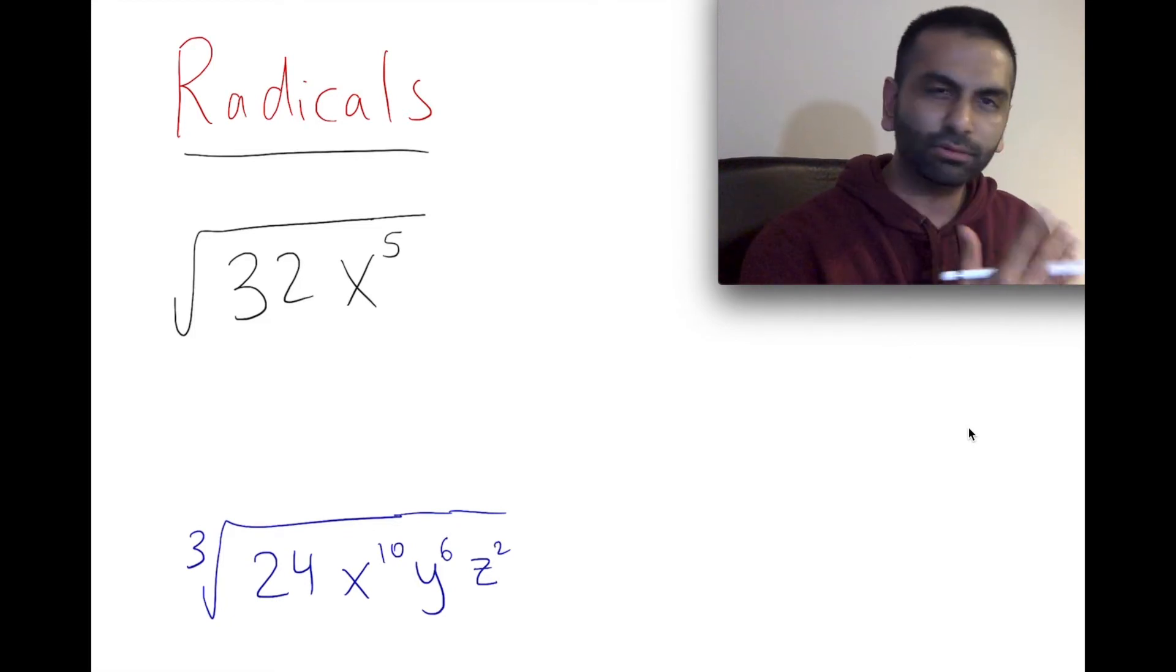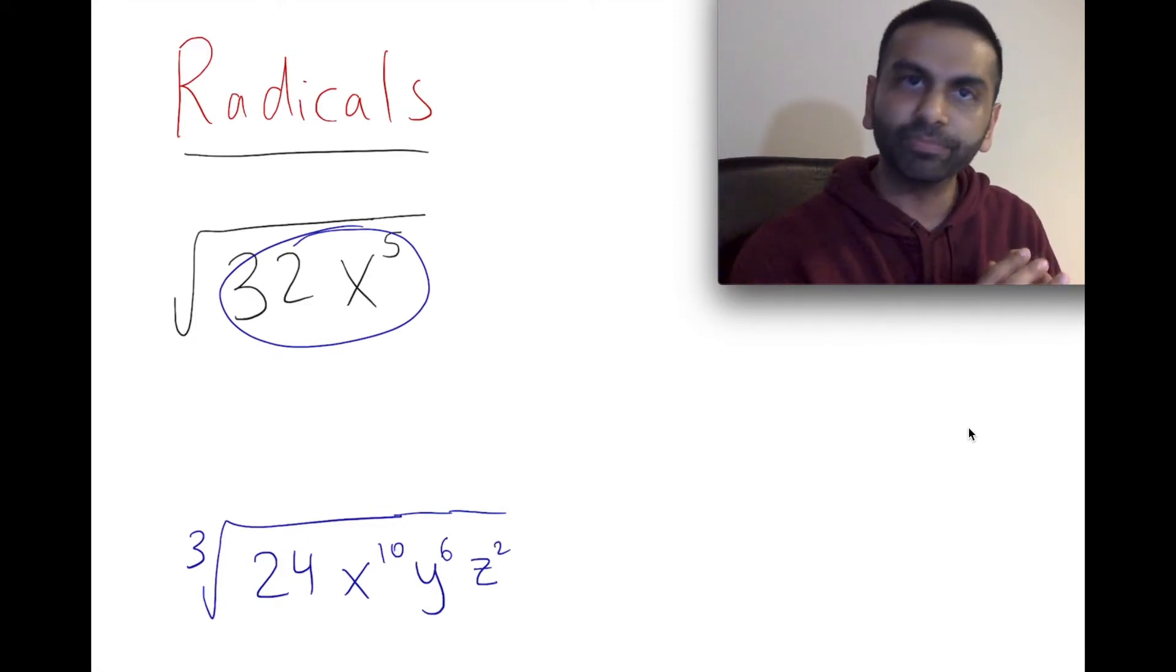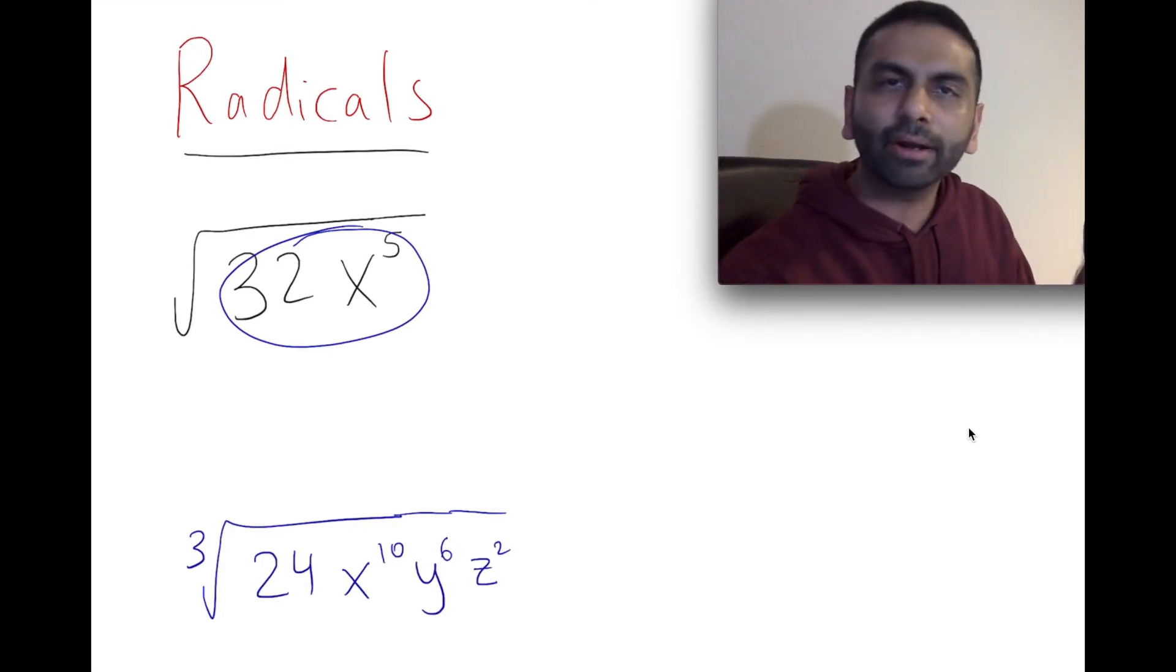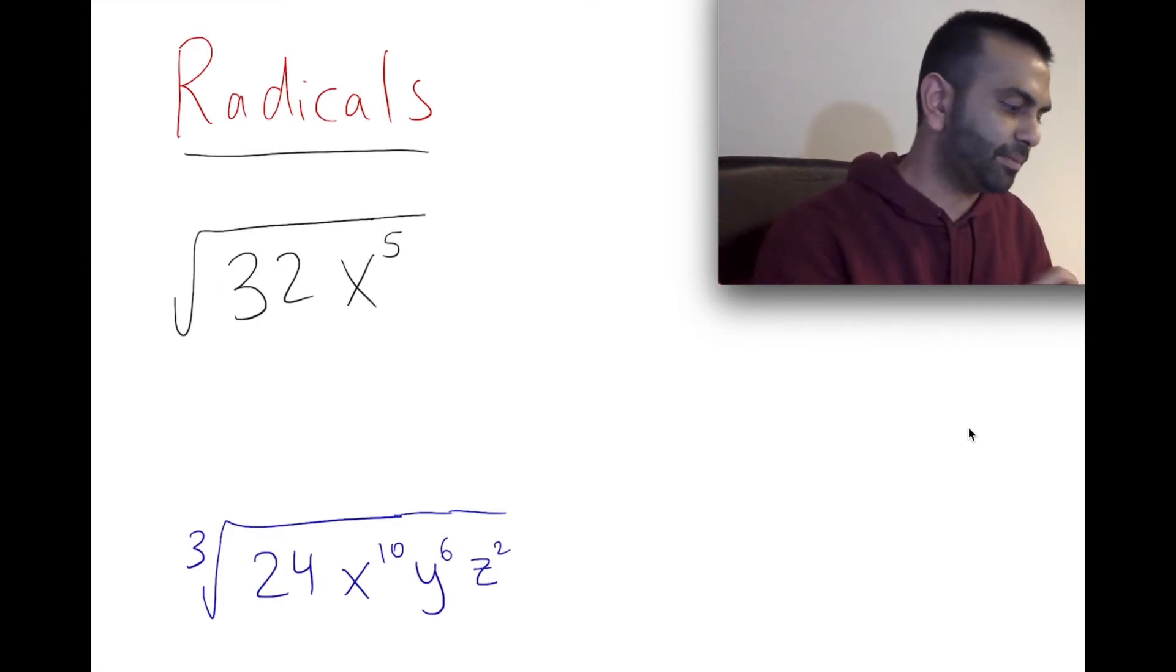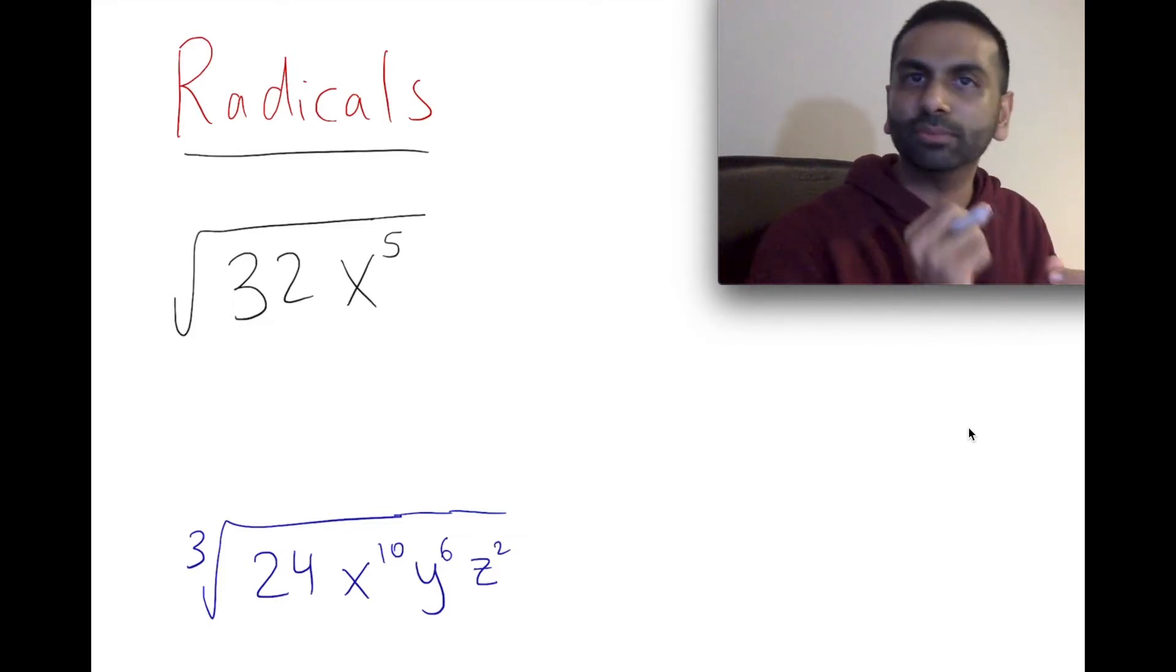So how could you rewrite this? How can you simplify this a bit? The key is that if there's a perfect square inside the radical that's multiplied, you can always pull that out and undo this square. With all these questions, it's good to separate the coefficient with the variable.